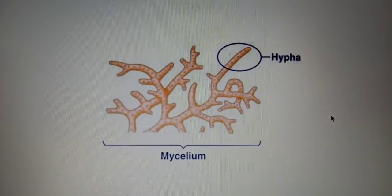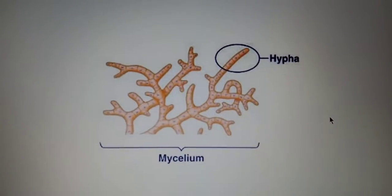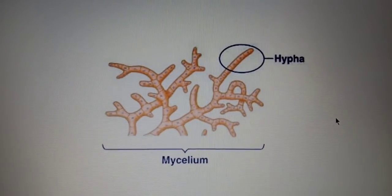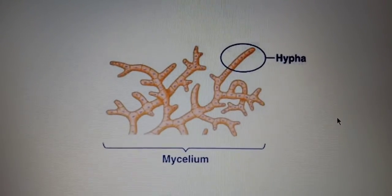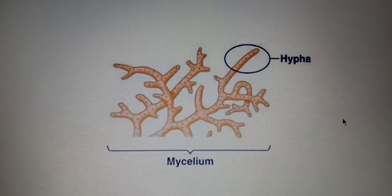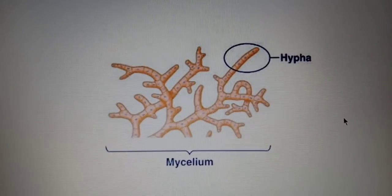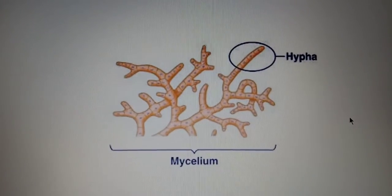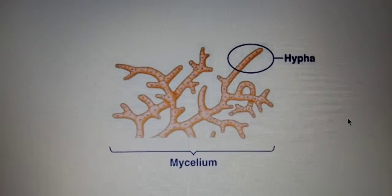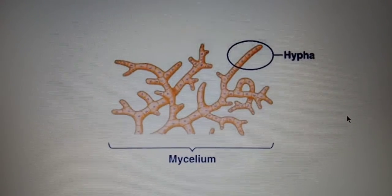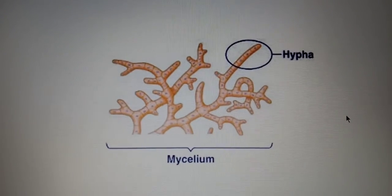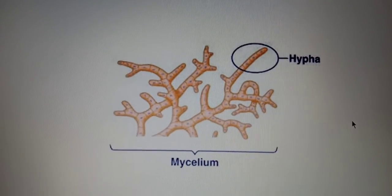Let's look at the structure of a particular fungus. The fungus consists of a network of thread-like structures. Each thread or filament is termed as hypha, and these hyphae form a close network. This close, anastomosing structure of hyphae is termed as mycelium.